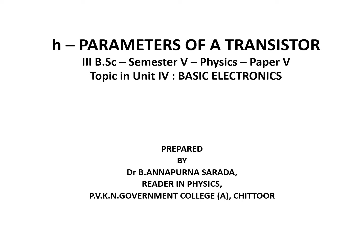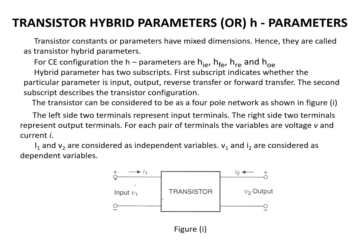In this lecture, I am going to explain about H-parameters of a transistor. What are H-parameters? H-parameters are nothing but hybrid parameters — hybrid parameters of a transistor. Transistor constraints or parameters have mixed dimensions, hence they are called transistor hybrid parameters.